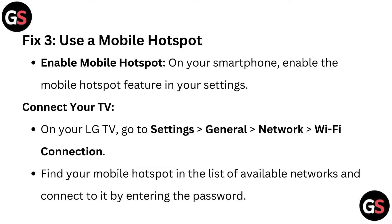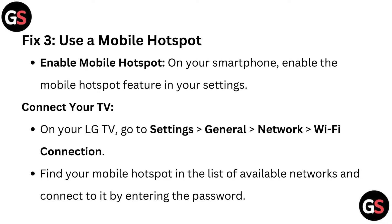Fix 3: Use mobile hotspot. On your smartphone, enable the mobile hotspot feature in your settings. On your LG TV, go to Settings, then General, then Network, then Wi-Fi connection. Find your mobile hotspot in the list of available networks and connect to it by entering the password.